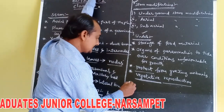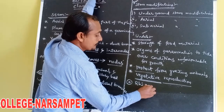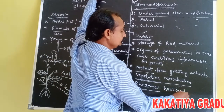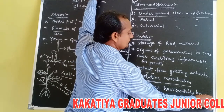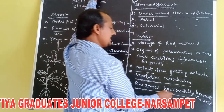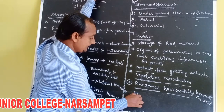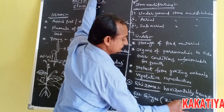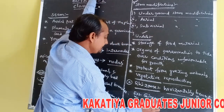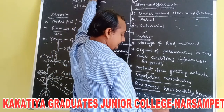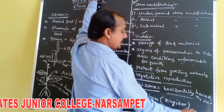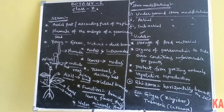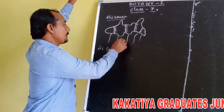The underground stem modifications are four types. First is rhizome. The underground stem that grows horizontally beneath the soil is called rhizome. For example, ginger and turmeric (Curcuma longa). This is the diagram of rhizome.